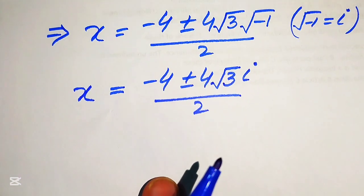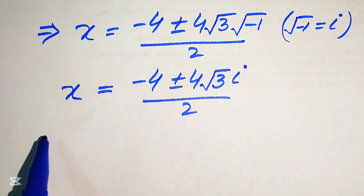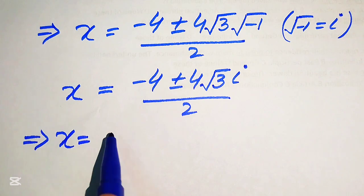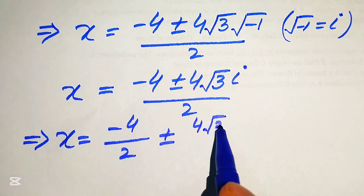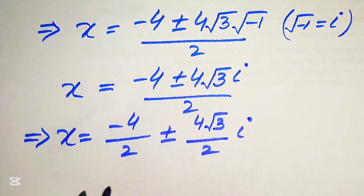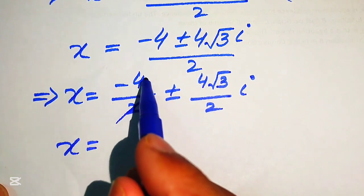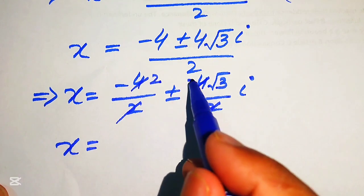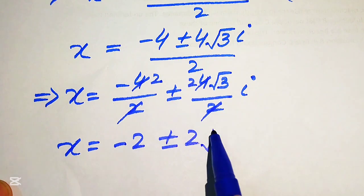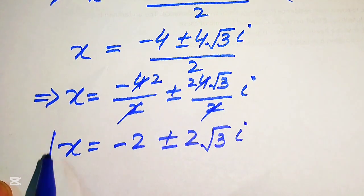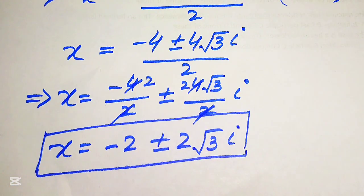In the next step we break this fraction, writing the 2 separately on both terms: x equals minus 4 divided by 2, plus or minus 4 times square root of 3 divided by 2 times i. Simplifying, this gives x equals minus 2 plus or minus 2 times square root of 3 times i. These are the other two roots of the given equation.